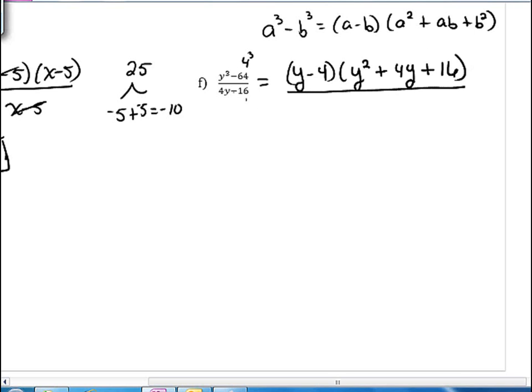In the denominator, 4y minus 16, there's a 4 as a common factor, so we're going to factor out a 4. In the parentheses, we would be left with y minus 4. And so the y minus 4s can cancel, and we're left with y squared plus 4y plus 16 over 4.